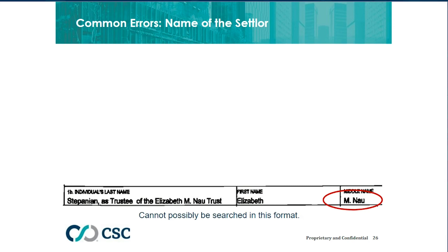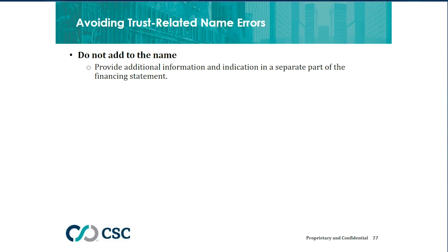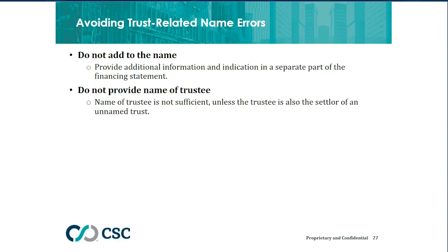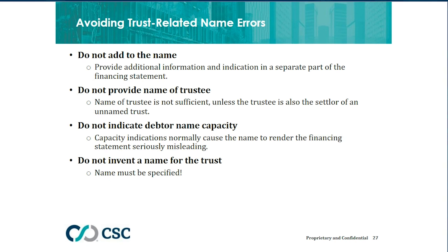How does one avoid trust-related name errors? Number one: never add anything to a debtor name. Any additional information that needs to be provided must be in a separate part of the financing statement. Don't provide the name of the trustee — unless the trustee is also the settlor of an unnamed trust — and never indicate capacity in the name unless it's part of the name in the source document. And this is a trap: do not invent a name for the trust. If a name isn't specified, there may not be a name for the trust. If a name isn't clearly specified, provide that as an additional debtor but also provide the name of the settlor.